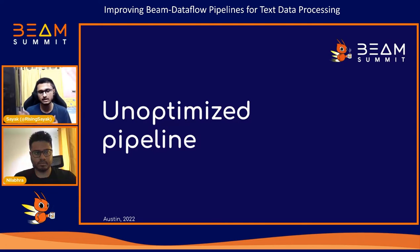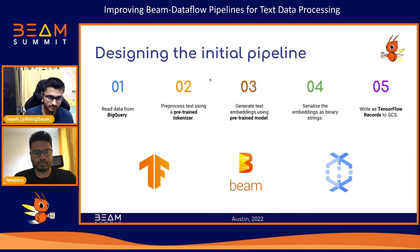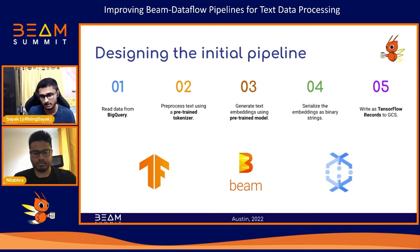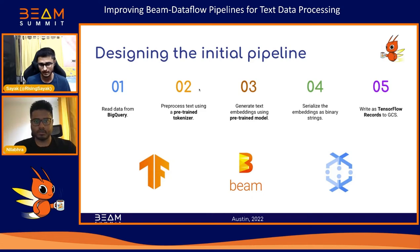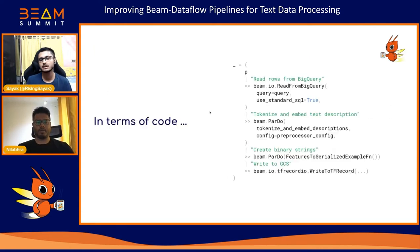Later in the session, Neil is going to share how this pipeline can be improved significantly. Here's the initial design: the first step is to read data from BigQuery, then pre-process the text using a pre-trained tokenizer, then generate text embeddings using a pre-trained BERT-based model, then serialize those embeddings as binary strings, and finally write those binary strings as TensorFlow records to a Google Cloud Storage bucket. We are leveraging three main tools: TensorFlow, Apache Beam, and Cloud Dataflow.